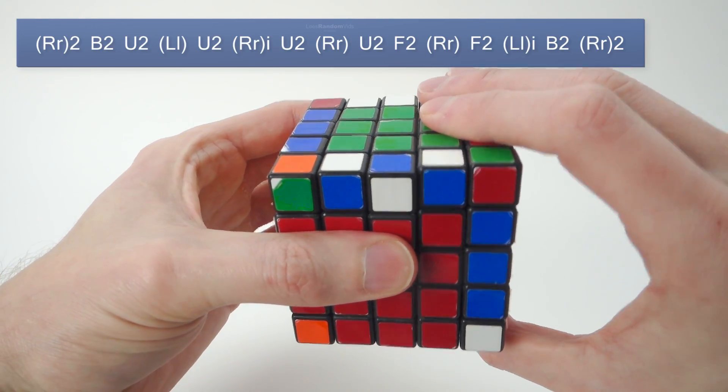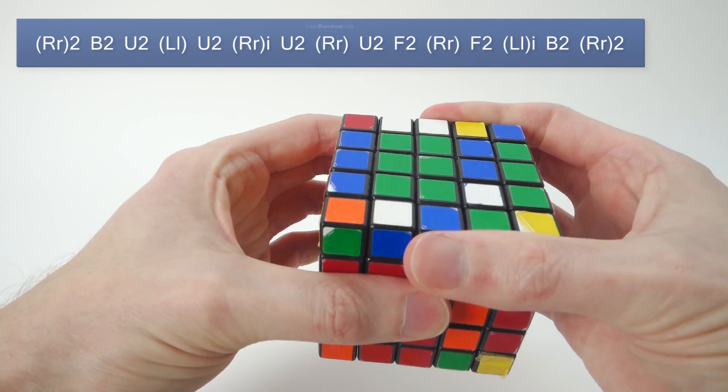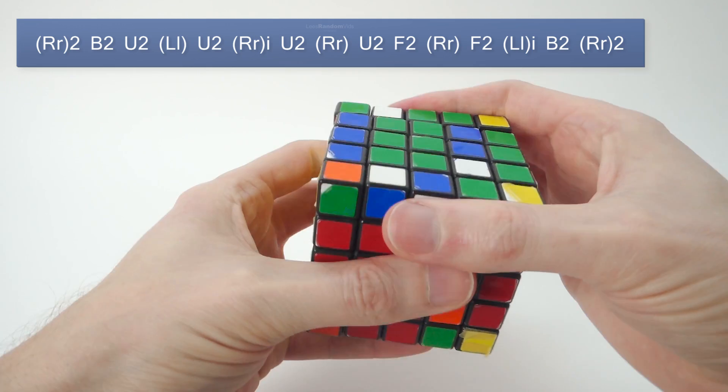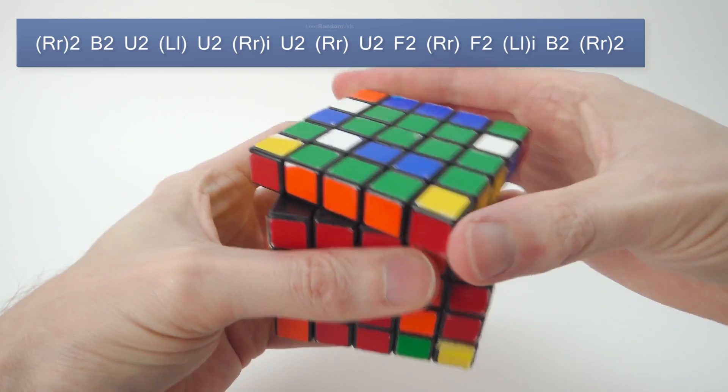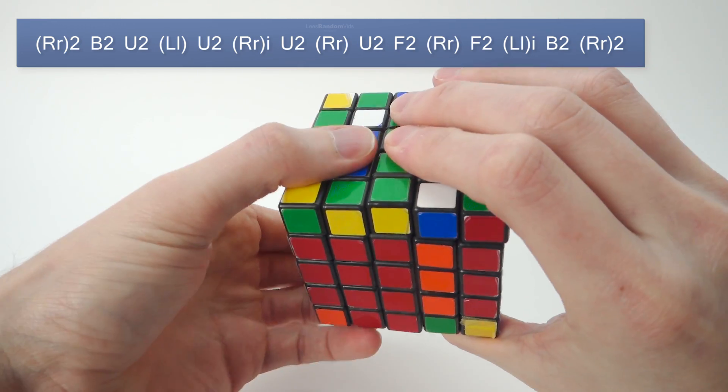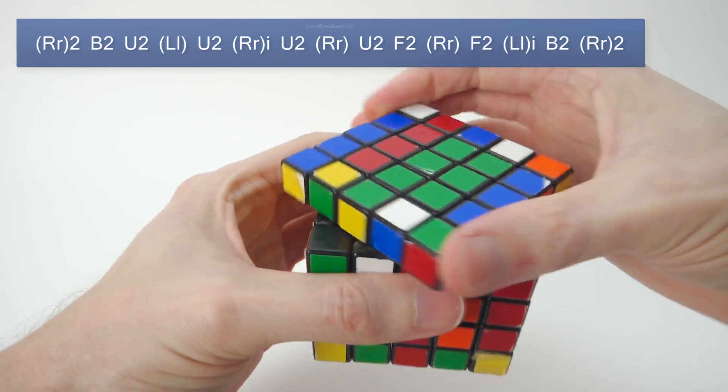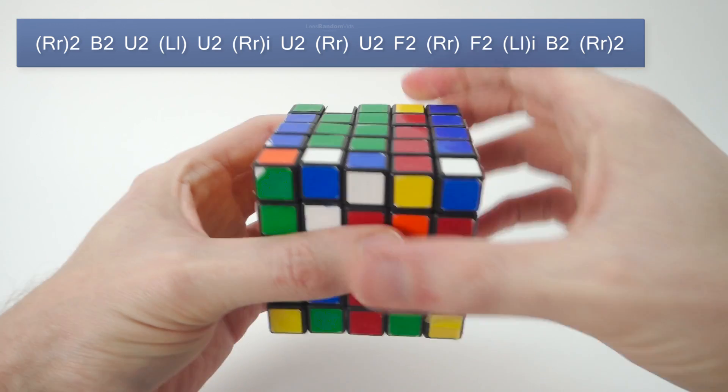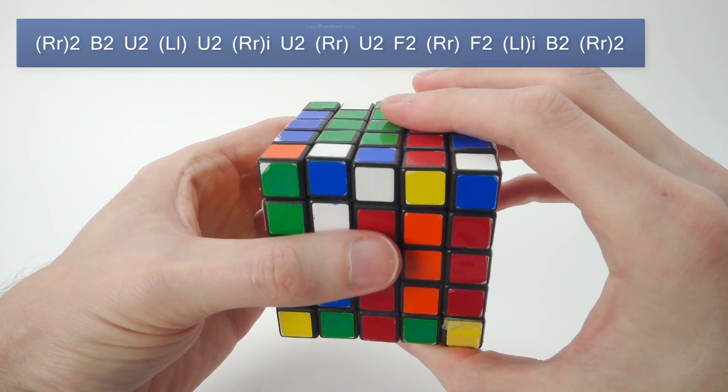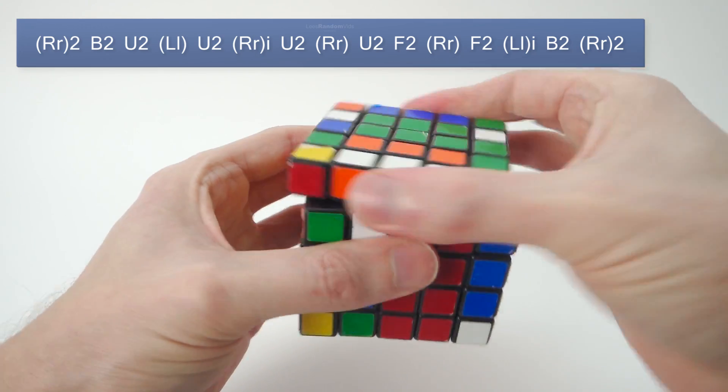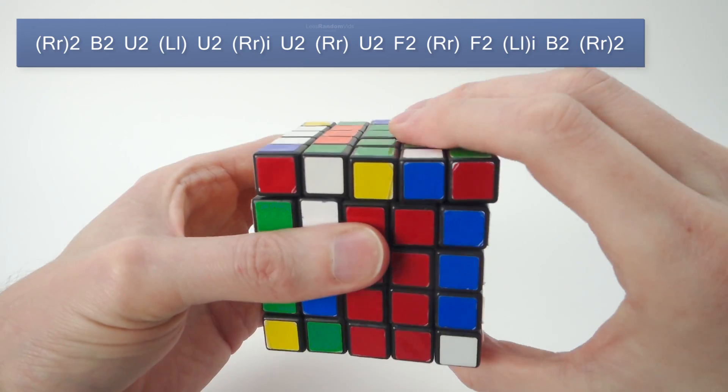Double R in brackets 2, B2, U2, double L in brackets, U2, double R in brackets inverse, U2, double R in brackets, U2.